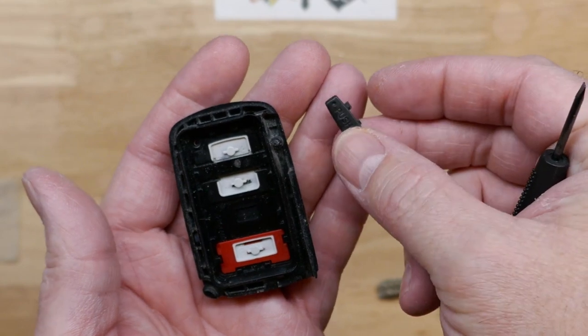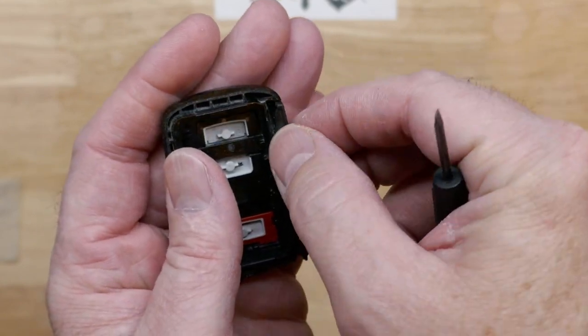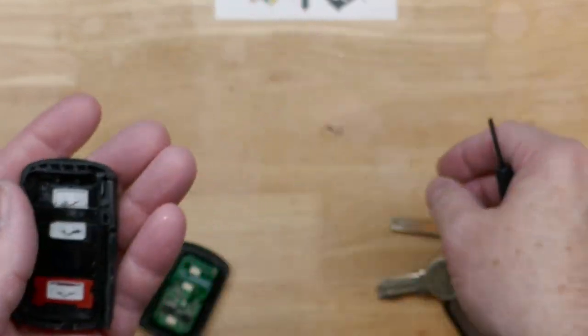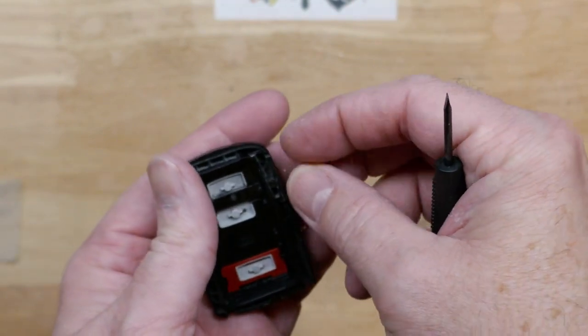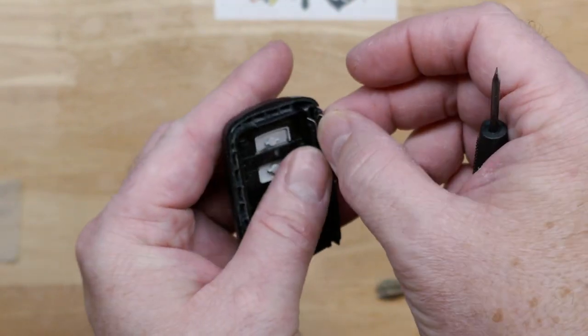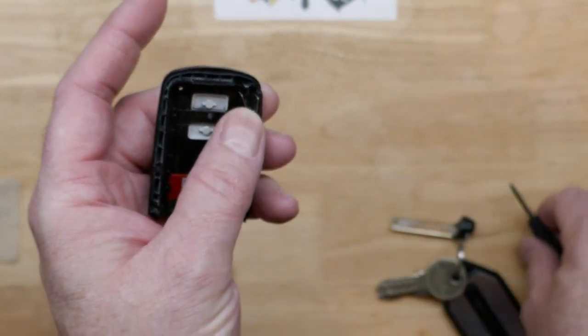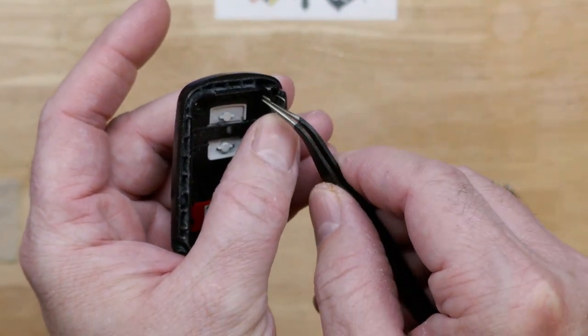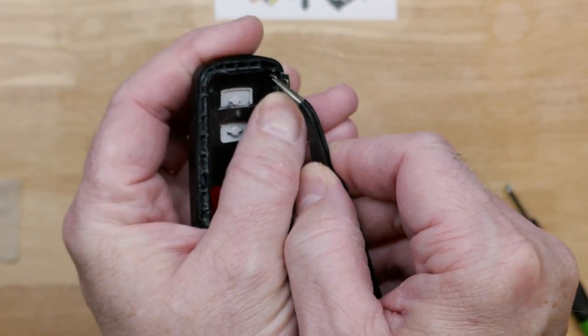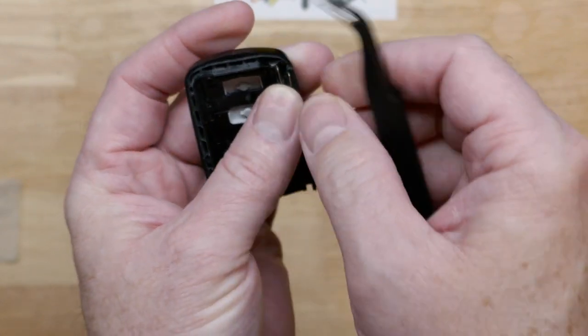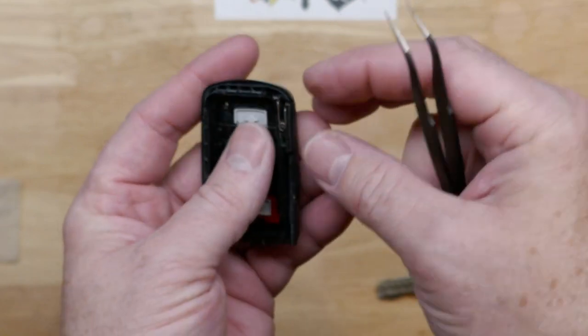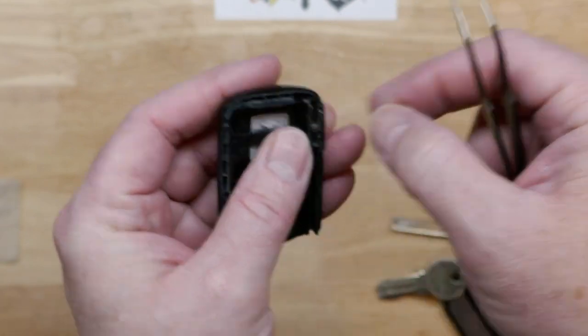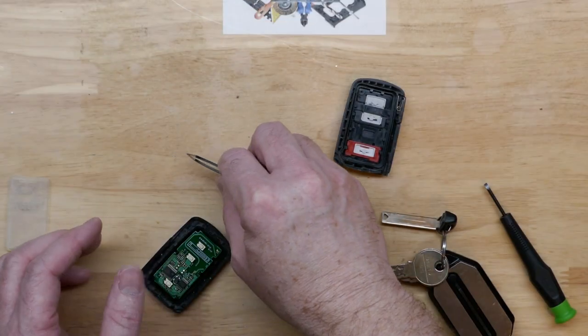So it goes just like this and slides right back on like so. And then we'll take our spring, and it's going to be the long side to my left. So the longest part of the spring will be to my left or towards the buttons. I'm just going to hold it down with my thumb until I get both ends of the spring back in place like so. And that feels good.